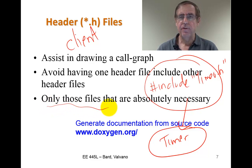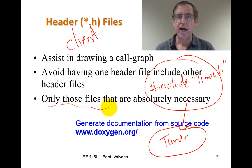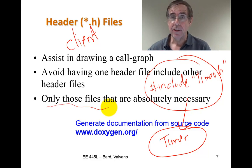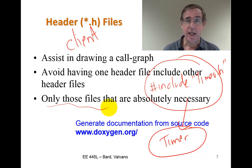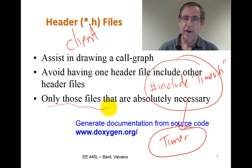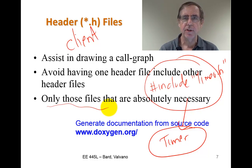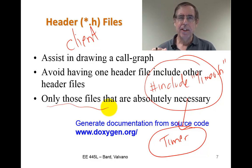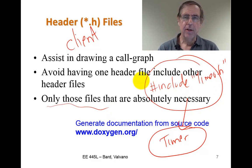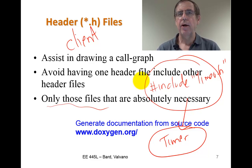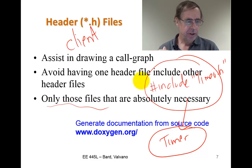In Valvano world, I don't like my header files to include other header files, because then you have no idea how everything's connected. Only C files include header files — that way you can clearly see all of the modules that a particular file needs to operate, and that will help you draw the call graph in your system.